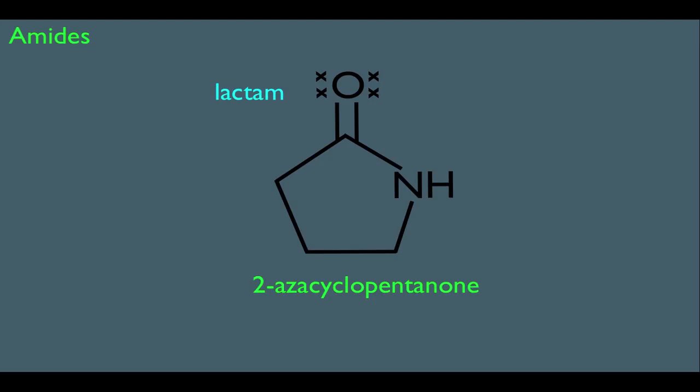You can even use the common naming system here. For instance, the common name for this would be gamma-butyrolactam. Where does this name come from? Well, the butyl part comes from the fact that there are 4 carbons within the ring. And, of course, the lactam part comes from the fact that the molecule is a lactam.